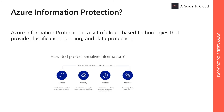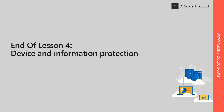Azure Information Protection is a set of cloud-based technologies that provide classification, labeling, and data protection. To protect data, Azure Information Protection uses Microsoft Azure Rights Management Services, also known as Azure RMS technology. Previously, Azure RMS was available as a standalone product, but it is now integrated with the Azure Information Protection solution, so you can use it together with classification, labeling, and tracking.